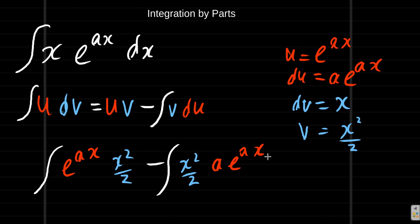You see here, you have gotten yourself into even more problem than you started with, because when you differentiate u, you go from e to the a x to a e to the a x. So going from u to du becomes more complicated. Then, dv is x, but v is x squared over 2. So both of them become more complicated.